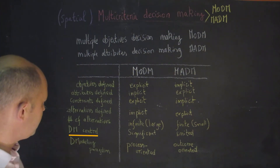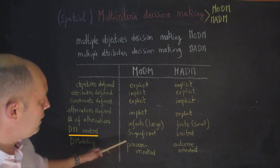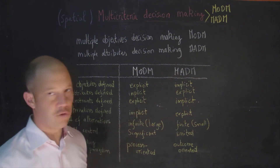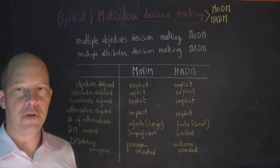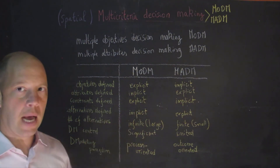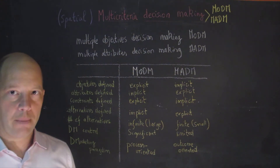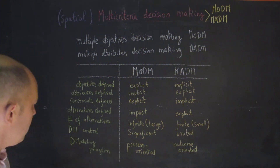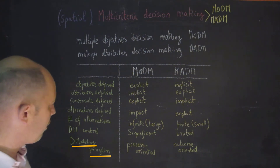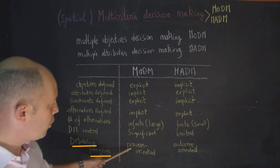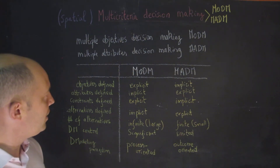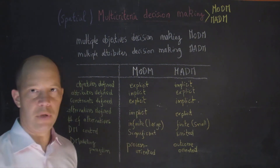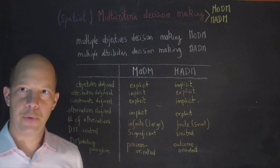The control of the decision-maker is significant in multiple objectives, but it's limited in multiple attributes — and even more limited when we have multiple stakeholders. Finally, in terms of decision-modeling paradigm, it is more process-oriented in multiple objective, and more outcome-oriented for multiple attribute decision-making.